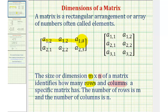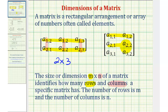So looking at this first matrix, it has two rows and three columns, and therefore the dimensions of this first matrix would be two by three. Comparing this to the second matrix, notice how this matrix has three rows and two columns. Therefore, the dimensions would be three by two.